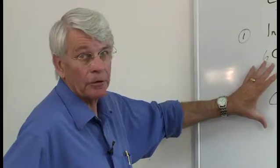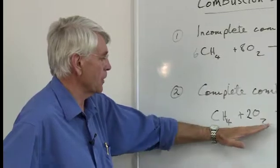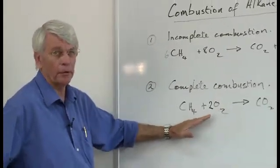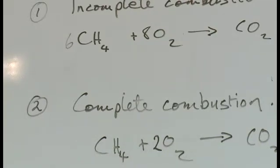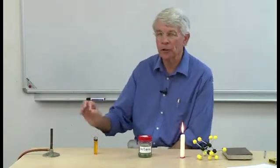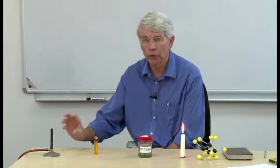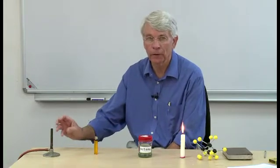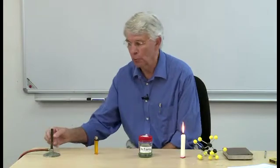From these two equations you can see that in the complete combustion there's just a greater amount of oxygen being consumed — that's a proportion of one to two, whereas the incomplete is one to three-quarters. So knowing that we can get complete or incomplete combustion depending on how much oxygen is used in the reaction, they've designed the Bunsen burner accordingly.